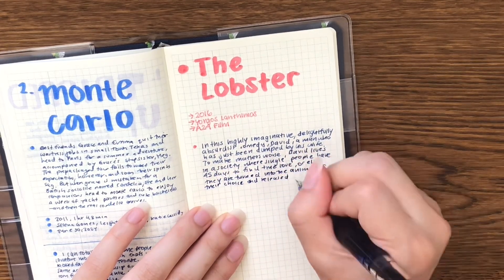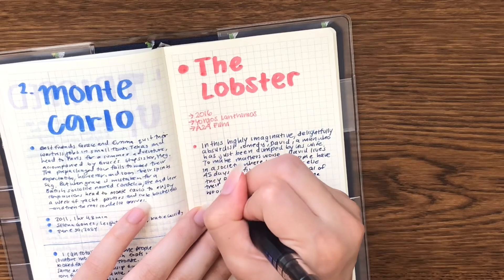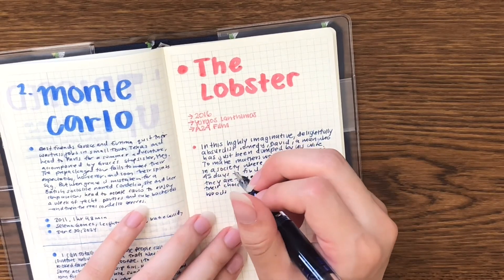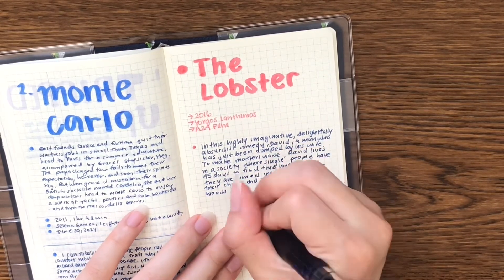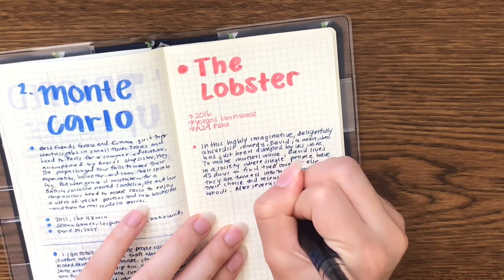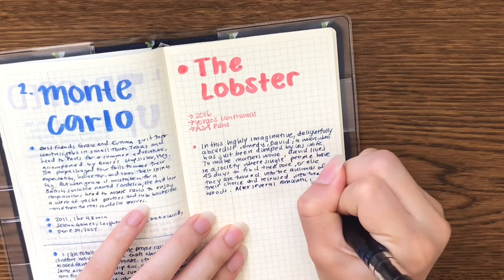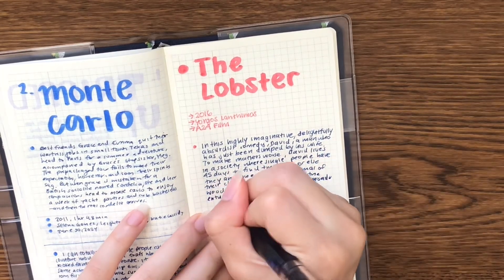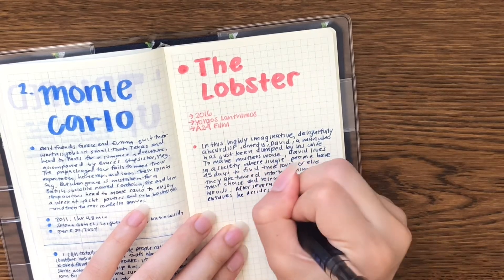My spreads are usually just me writing the title with some of the markers I have, and then writing a little fact summary about it in terms of when the movie was released, the director, and maybe the producers for it.